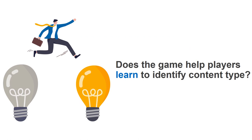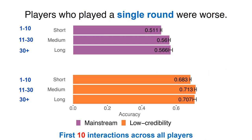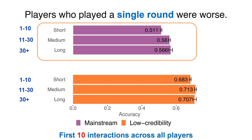To help disentangle these two explanations, we conducted further analysis to check whether FAKEY helps players learn to spot questionable content. First, we compared the accuracy of recognizing mainstream and low-credibility news only for the first round — the first ten articles encountered by each of the three player groups. Kruskal-Wallis tests revealed statistically significant effects across the three player groups for mainstream articles, but not for low-credibility ones. Post-hoc tests found that those who played only a single round were worse at recognizing mainstream content during that round compared to first-round performance of those who continued playing, suggesting that self-selection might be a factor influencing the results.